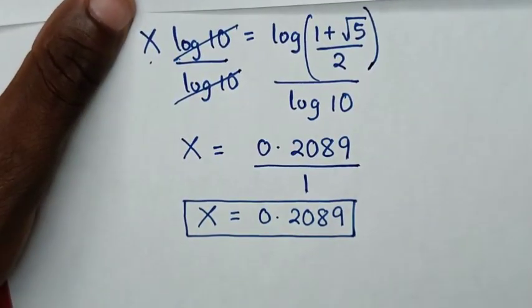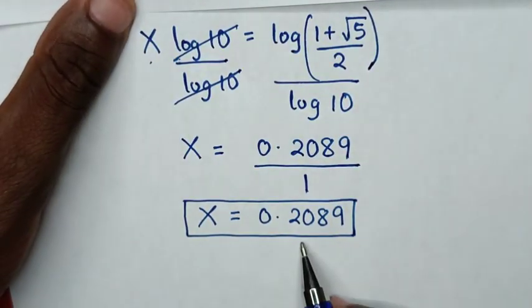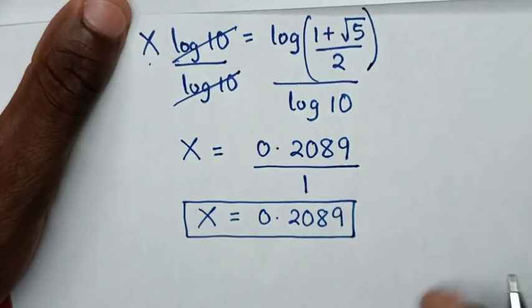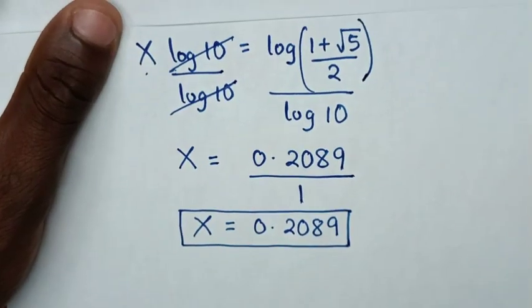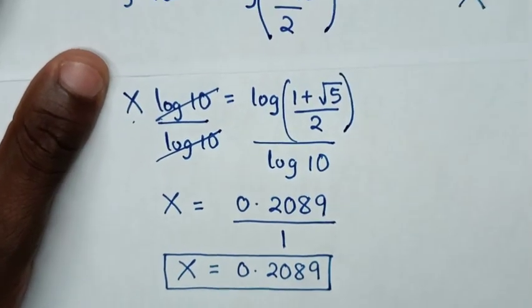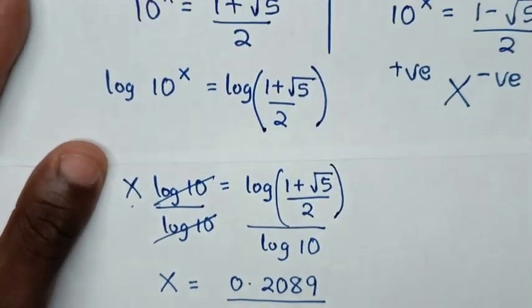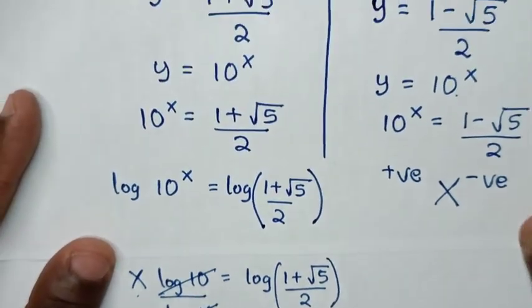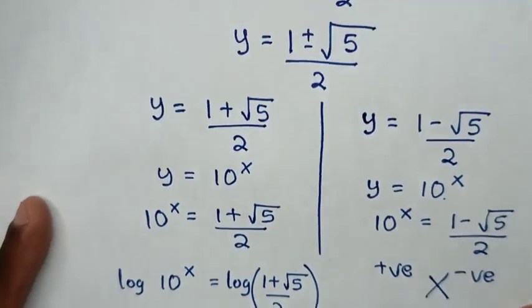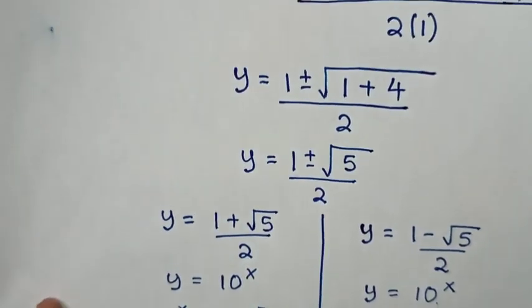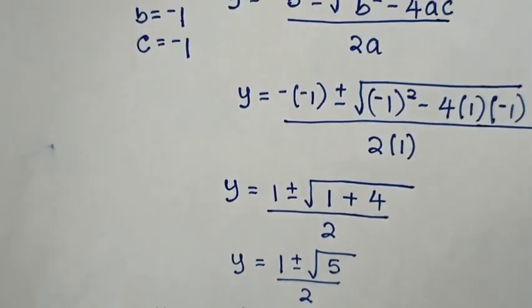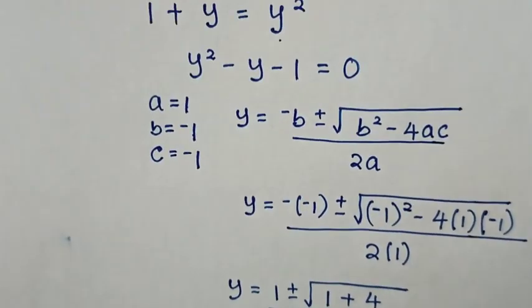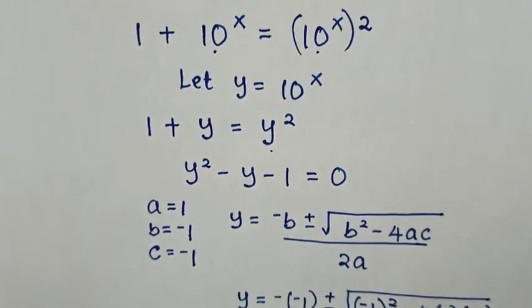Therefore, the only value of x is 0.2089. Thank you for watching — don't forget to subscribe to my channel and see you in the next video.